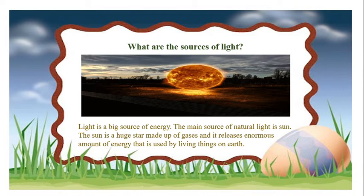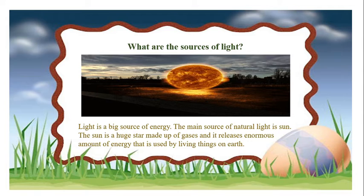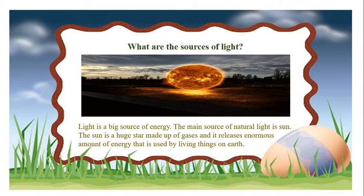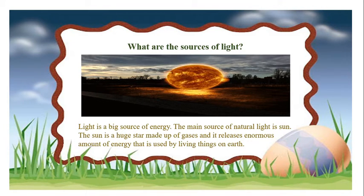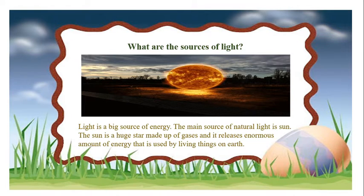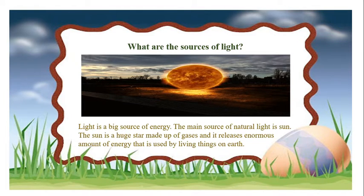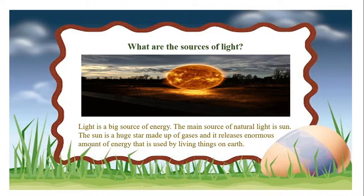As we have already discussed in our previous lecture video, the natural and artificial sources of light. For example, sun, stars, firefly, fire, thunder, and lightning are the natural sources of light. While bulb, LED, torch, lamp, and candle are artificial sources of light.